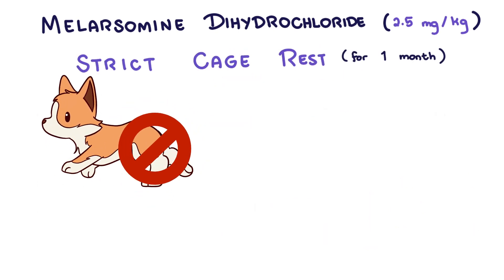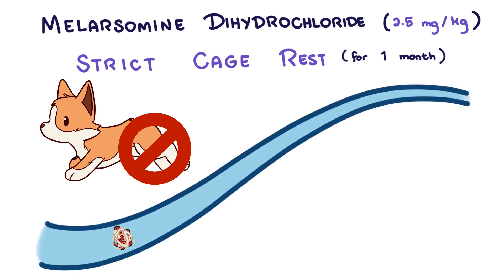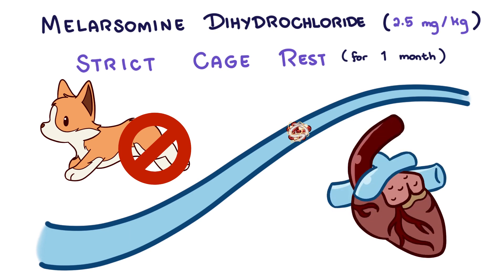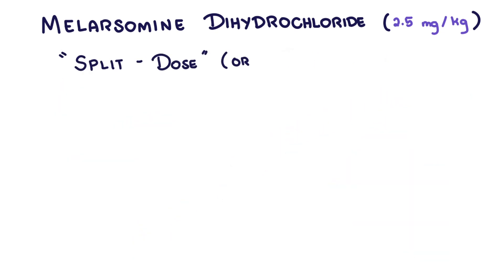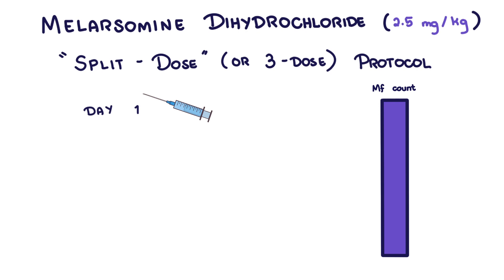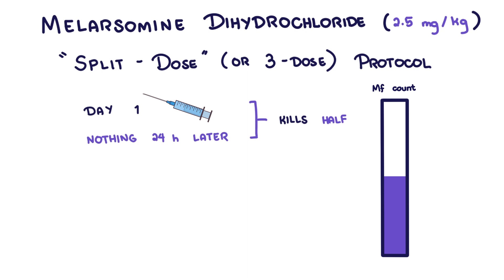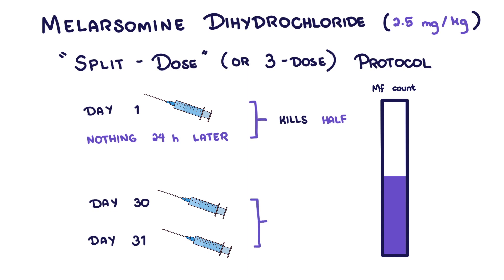Strict cage rest must be employed after melarsamine administration because thromboembolic events are likely to occur as the heartworms die. We don't want the heart beating too fast, which would make blood flow turbulent and push dead worms into small arterioles. The American Heartworm Society recommends the split-dose or three-dose protocol to reduce the risk of thromboembolism. It starts with a single dose of melarsamine with nothing 24 hours later, killing only half of the heartworms. Then after one month, two doses are given 24 hours apart, killing the remaining worms.